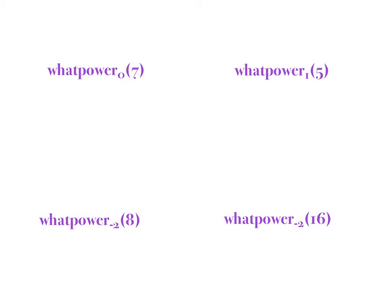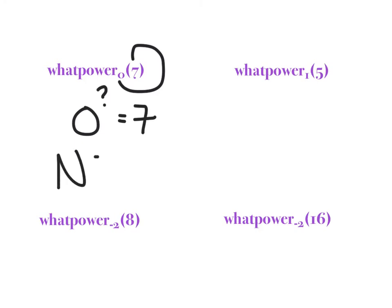All right, so we're going to keep going. What power of 0 is 7? So I'm saying what power of 0 is 7? Well, what's 0 to the 1st? That's 0. 0 to the 2nd is 0. 0 to the 3rd is 0. 0 to the negative 1st is 0. Is 0 to any power 7? No. This can't be done — so let's make a note: can't be done.